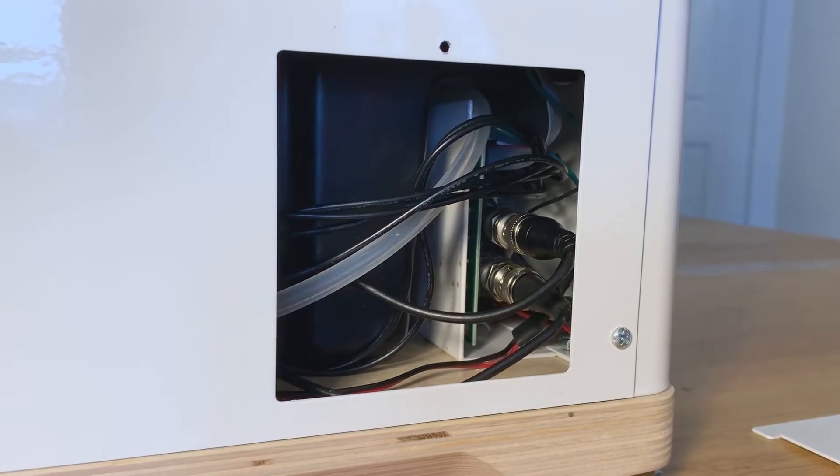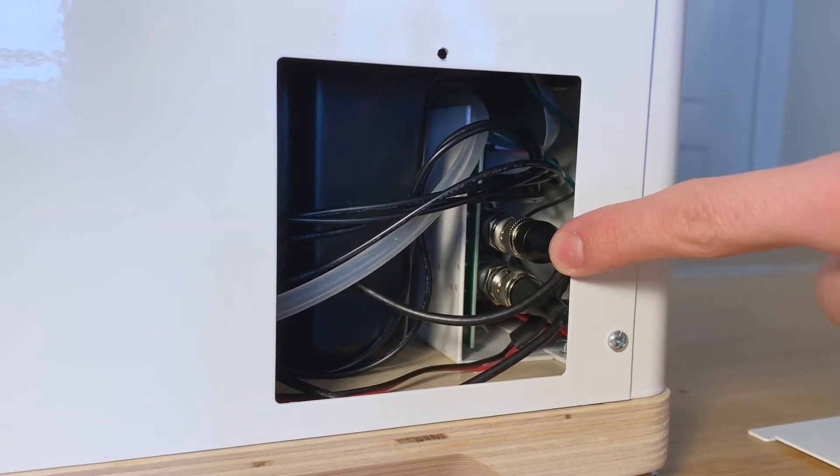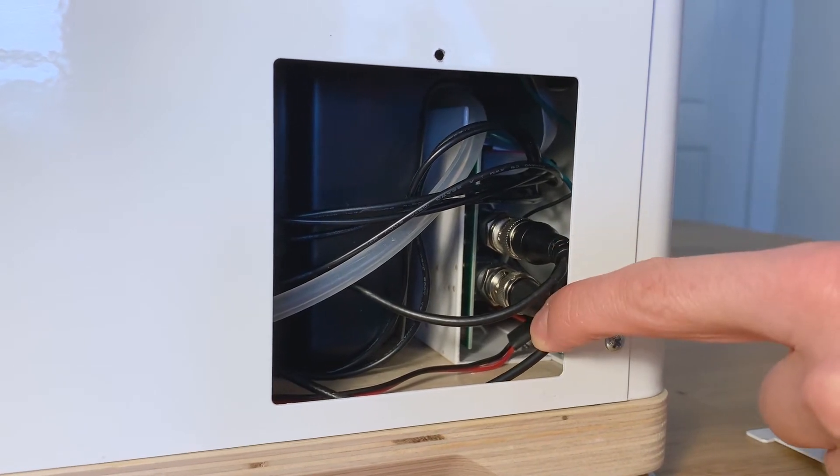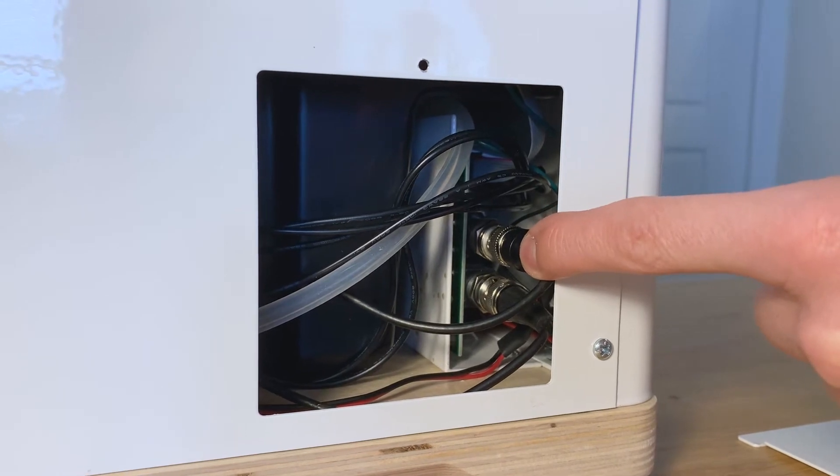Once you have the back access hatch open, you're going to be looking for these two connectors. The top one is the pH connector and the bottom one is the EC connector. We're going to undo the pH connector because that's what we're switching.